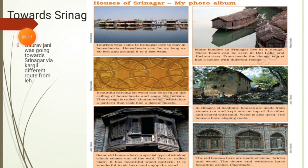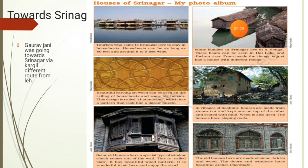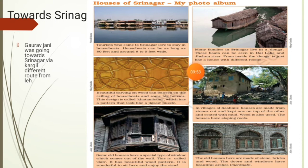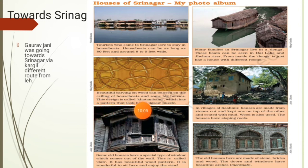From there, Gaurav Jani started his journey towards Srinagar via Kargil, a different route from Leh. He took photos of the houses of Srinagar. Tourists who come to Srinagar love to stay in houseboats. The houseboats can be as long as 80 feet and around 8 to 9 feet wide. Many families in Srinagar live in a Donga. These boats are seen in Dal Lake and Jhelum River. From inside, the Donga is just like a house with different rooms. Beautiful carvings can be seen on the ceiling of houseboats — this design is called Khatamband, which is a pattern that looks like a jigsaw puzzle.